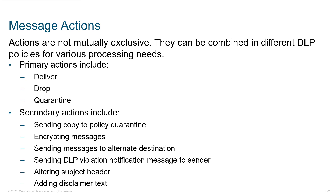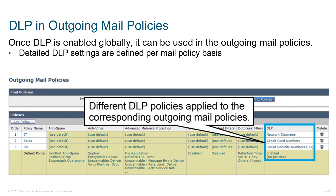When we get a match, we can say the message should still be delivered but just logged. Alternatively, we can drop it or quarantine it — that's the primary action. In addition, we can add steps: send a copy to quarantine, encrypt the message, send the message to an alternate destination like investigations@cisco.com, or send a DLP violation notification to the sender — letting them know they tried to send something that's been reported. We can also alter the subject header and add a disclaimer. When creating your outgoing mail policy, you associate the DLP rule you created, and you can see this done group by group — IT with network diagrams, sales with credit card numbers, HR with social security numbers.